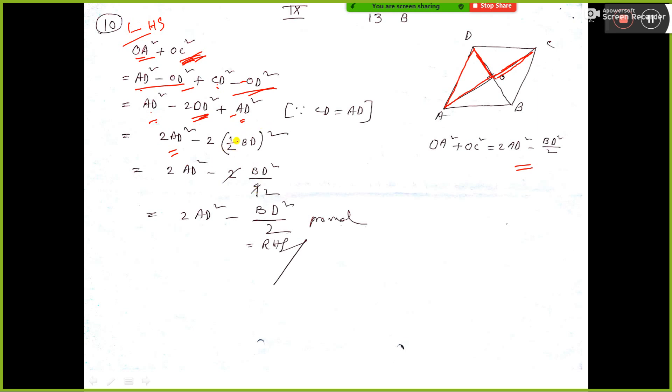This is half means 1 by 4 square. Half whole square means 1 by 4 and BD square. So we have got the right hand side.